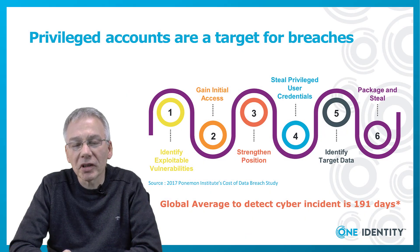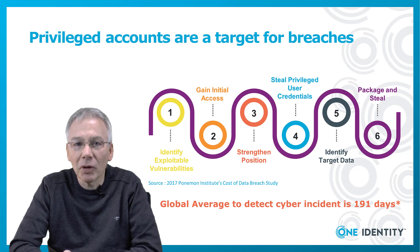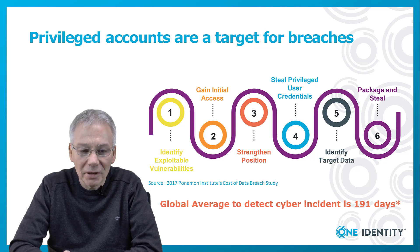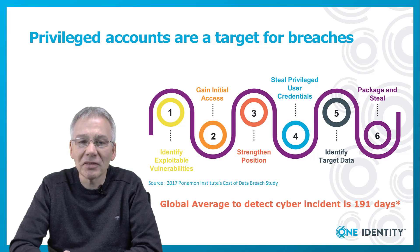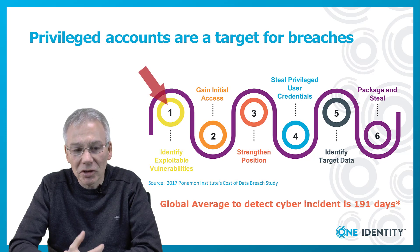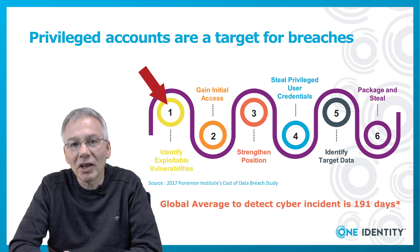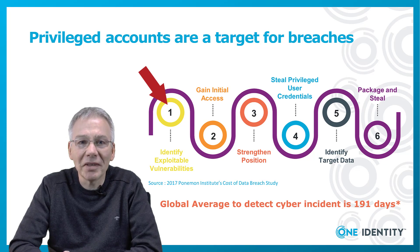Let's talk about privileged accounts and why these accounts are important in a company — or more specifically, why these accounts are a target for attackers and for breaches. If you look at the standard attack vector, it's a process that happens every day in a company and shows how intruders and attackers gain a foothold in a company to steal data in the end. It usually starts with point number one: the identification of some kind of vulnerability or way into a company.